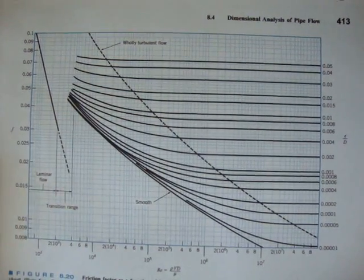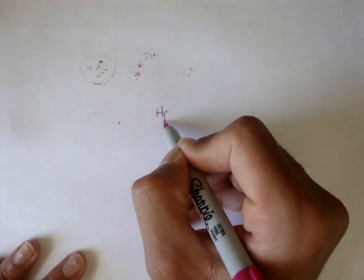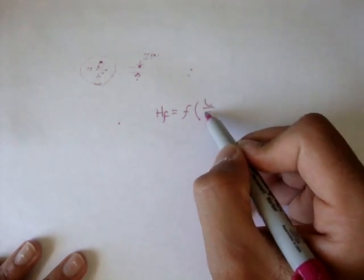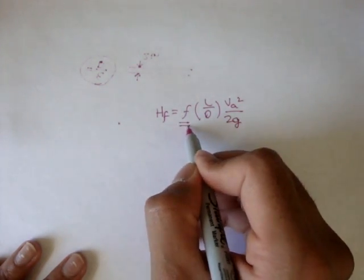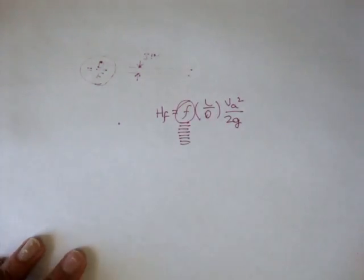Okay? And remember, we can use the frictional factor in our major loss formula, which, remember, was the frictional factor times L over D of the average squared over 2D. So, now, using the Moody chart, we know how to calculate our frictional factor.